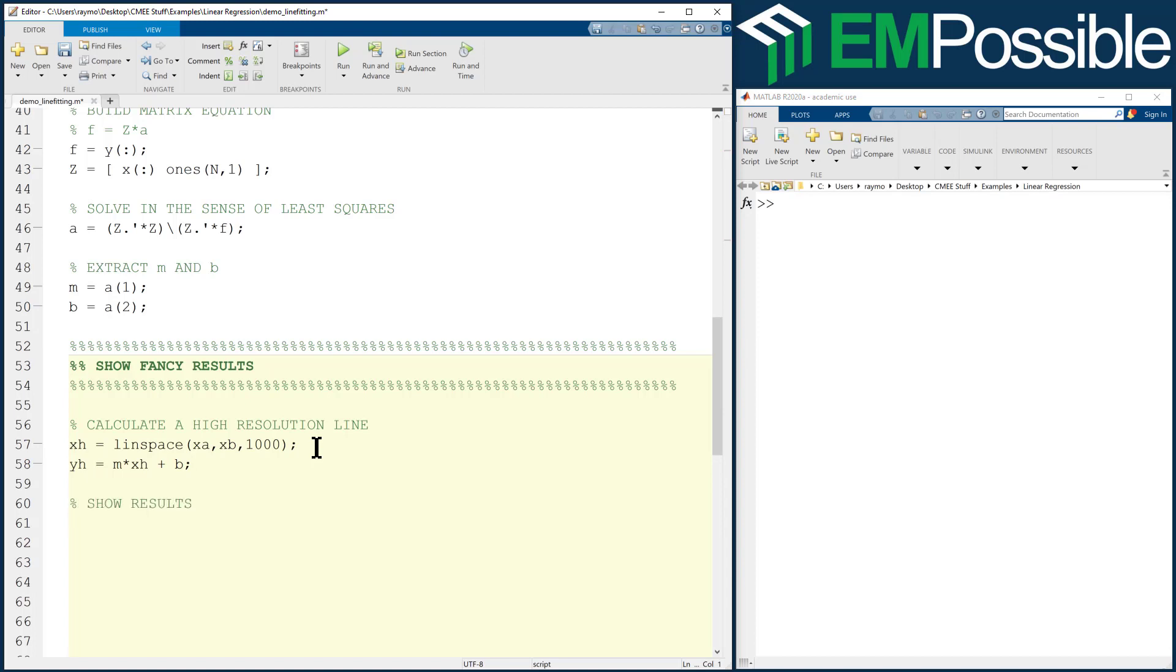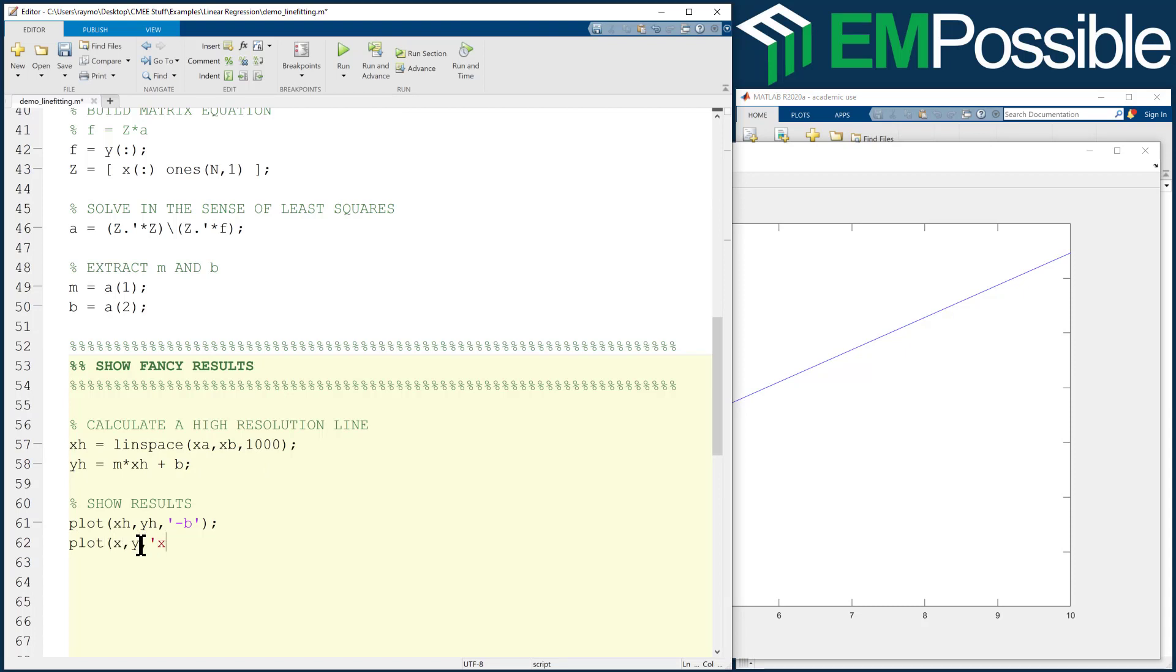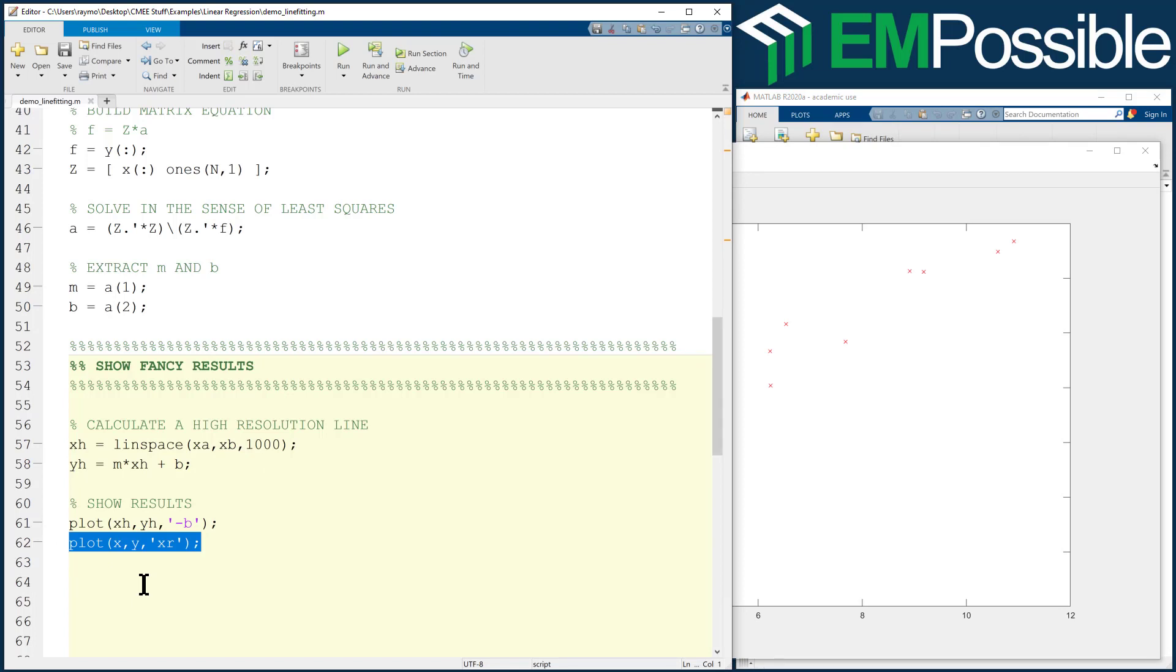Let's show the results. Let's plot the high resolution line, XH, YH, and we'll do that with maybe a solid blue line. Let's go ahead and run that. There's our solid blue line. We're also going to want to see the samples around that. Plot X, Y, and we'll do this with red X's. Let's run it. We see our samples, but our blue line has disappeared. That's because MATLAB sees a plot command and automatically clears the figure window. We don't want that. We want to say hold on, freeze graphics, keep whatever's there, plot right on top of it. Then we'll plot the samples and then hold off. Now we'll see both.